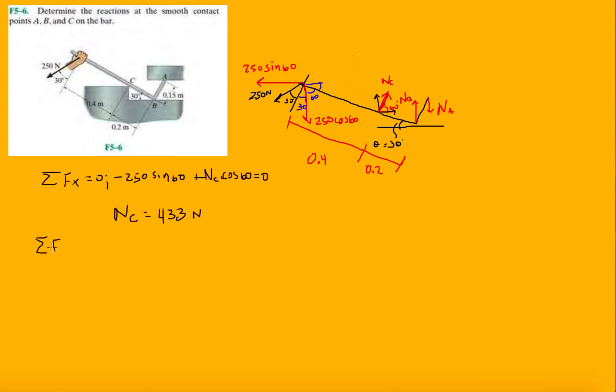Alright, so then let's move on to F_y. F_y equals zero. I'm gonna try to speed this one up. So we have minus 250 cosine 60, plus N_C sine 60, plus N_B minus N_A equals zero.